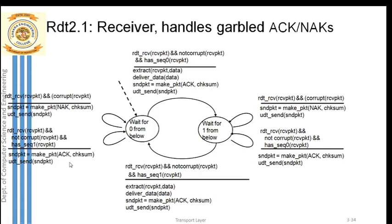There is one more condition to check - what if the receiver receives a packet with the wrong sequence number? The receiver is receiving a packet that is not corrupted, but the received packet has sequence number one, whereas the receiver is expecting sequence number zero. Receiving a packet with the wrong sequence number means it is a duplicate packet arriving.